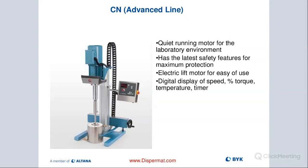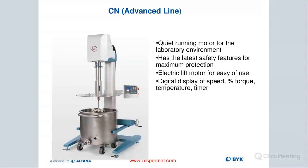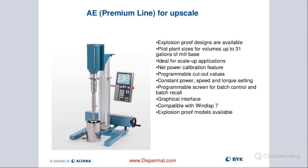The motors have very low vibration — you could put a quarter on top of the motor and it would not even move at high RPMs because they're so quiet and stable. Then we have the larger CN, with the same type of capability, but now for small production or pilot. And then we have our premium model, which is called the Dispermat AE.